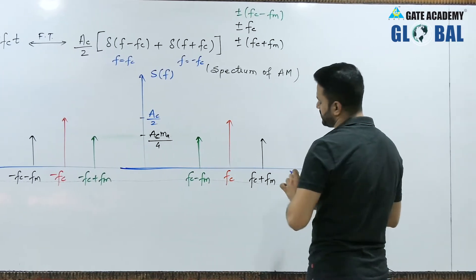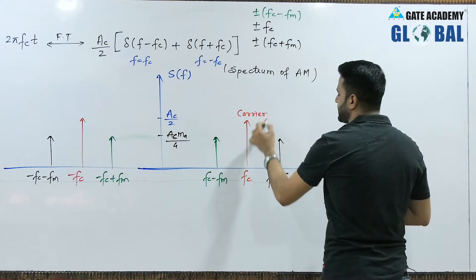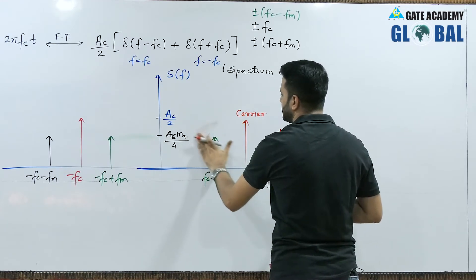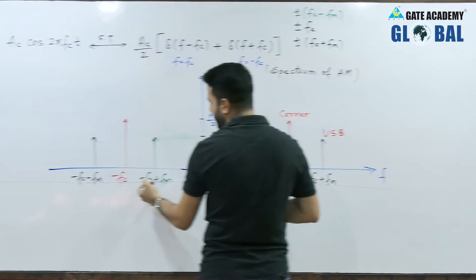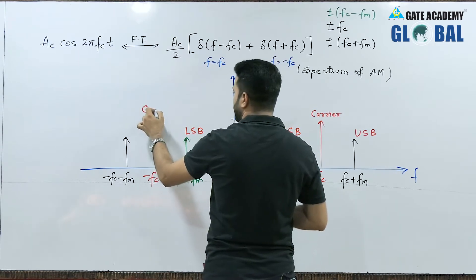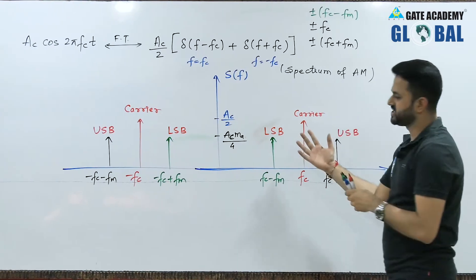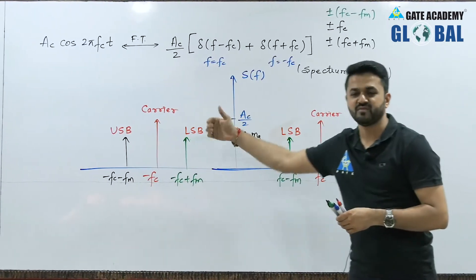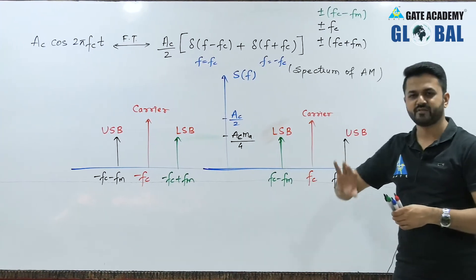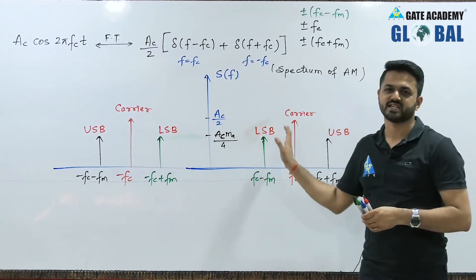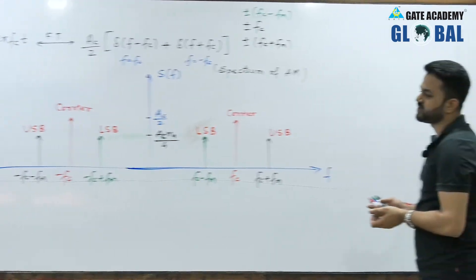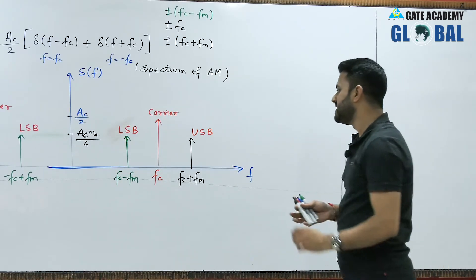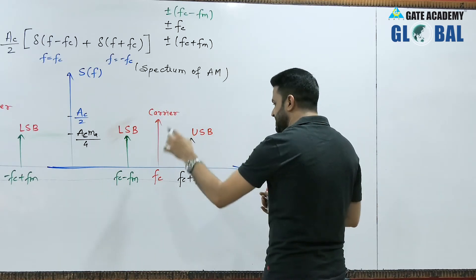This is the spectrum of AM signal for single tone modulating signal. The carrier term is at FC, the frequency component higher than carrier is the upper sideband, and the component lower than carrier is the lower sideband. The negative part is the mirror image of the positive part. Bandwidth is always calculated from the positive side of the spectrum, since frequency should be positive.